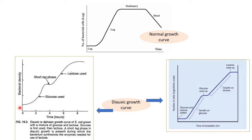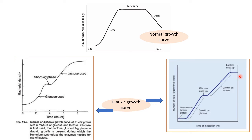But in case of the diauxic growth curve, you will find two growth curves. First the glucose is used. Then there is a short lag phase where the bacteria is adapting, or it is synthesizing the enzymes required to utilize lactose. And then again there is a log phase or exponential phase. So you can see: first glucose and lactose are added; enzymes are synthesized which are required for the utilization of glucose; growth occurs on glucose first. Then glucose is used up, and now there is a lag phase for synthesis of enzymes required for lactose to be used. Growth then occurs based on lactose metabolism. And again the lactose is used up, so you find the stationary phase. This is the diauxic growth curve.